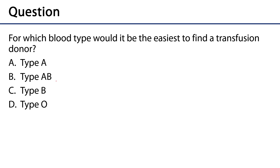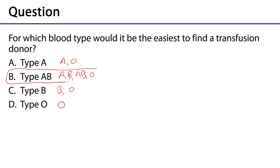For which blood type would it be easiest to find a transfusion donor? Type A can receive blood from type A or type O. Type AB can receive from A, B, AB, or O types. Type B can receive from B or O. And type O can only receive from O. So the easiest blood type to find a transfusion donor for would be the universal recipient: type AB.